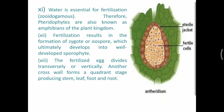Water is essential for the process of fertilization. The antheridia break open when water droplets fall on them — due to water pressure, the outer jacket opens up, releasing the inner antherozoids, which swim and cause fertilization. Therefore, pteridophytes are also known as amphibians of the plant kingdom along with bryophytes. Fertilization results in the formation of an oospore or zygote, which develops into the diploid sporophyte. The fertilized egg divides transversely or vertically, leading to a quadrant stage and producing the stem, leaf, foot, and root.